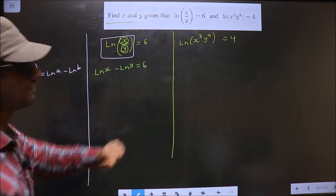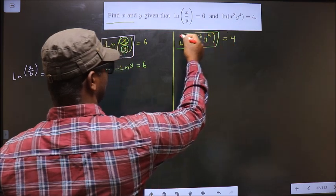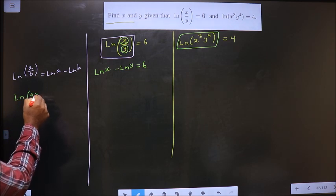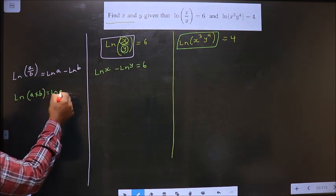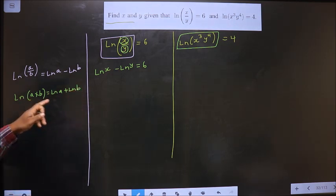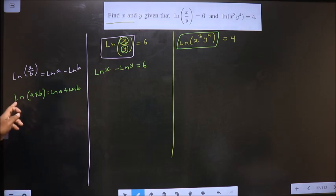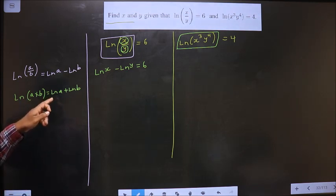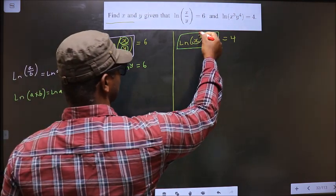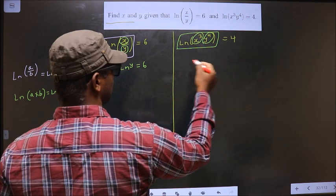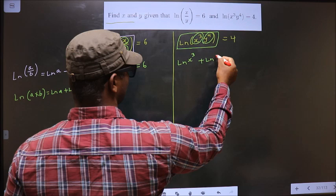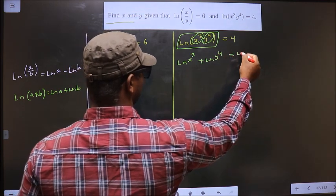Now on the second equation, I apply the formula: ln(a·b) = ln(a) + ln(b). Whenever you have multiplication, you get addition. In place of a you have x³, and in place of b it is y⁴. So you get ln(x³) + ln(y⁴) = 4.